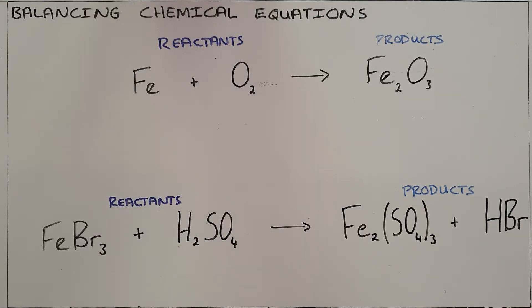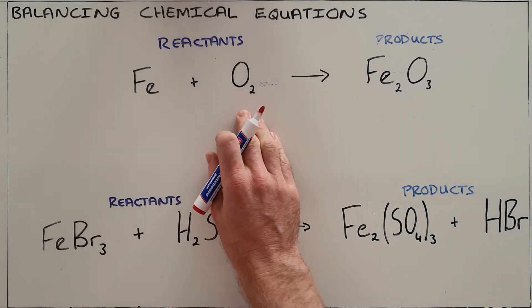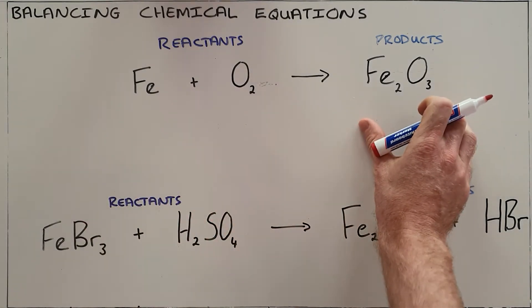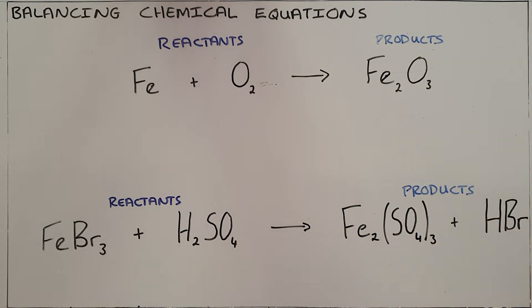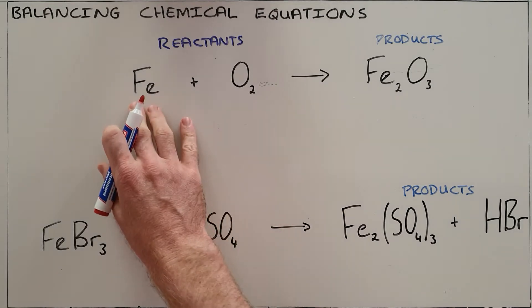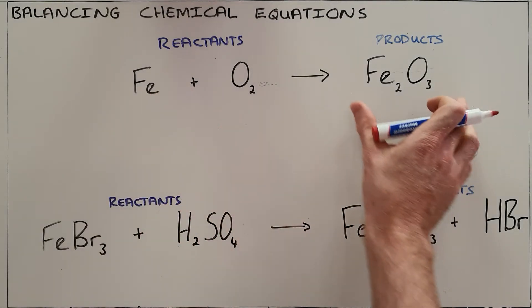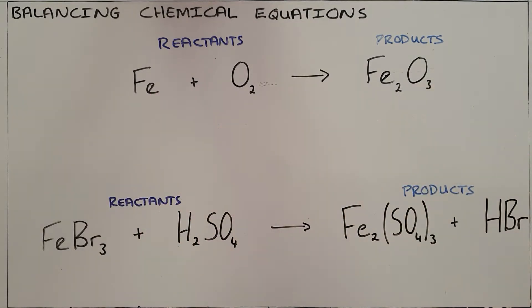Balancing chemical equations has a very important function in chemistry as it helps us to understand in what ratio elements and compounds react with each other, which helps us in industry when determining what ratios or amounts of each substance we need in order to produce a certain amount of product. The reason we balance equations is to ensure that all reactants are completely converted into products and there are no leftovers after the reaction is complete.